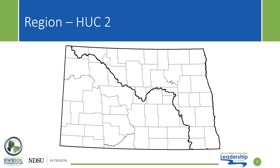Here is a depiction of the HUC-2 watersheds in North Dakota. Because of the size of these watersheds, they overlap into much of the rest of the country. In the southwest portion of the state is the Missouri-Mississippi watershed that drains to the Gulf of Mexico. On the northeast side of the state is the Red River watershed, which drains into Hudson Bay. The line that separates these two watersheds is known as the Continental Divide.